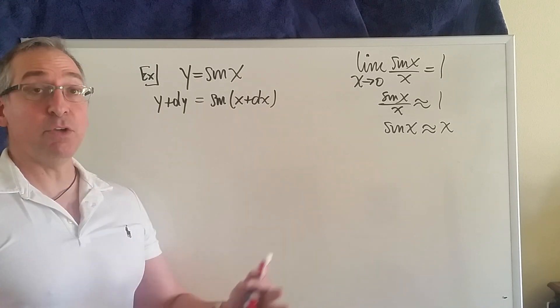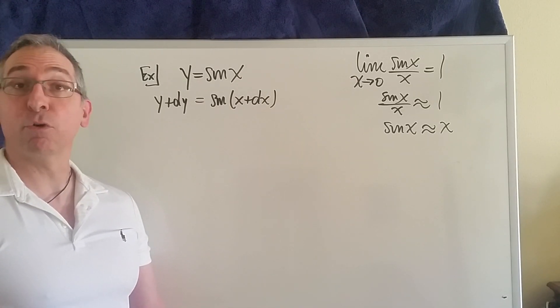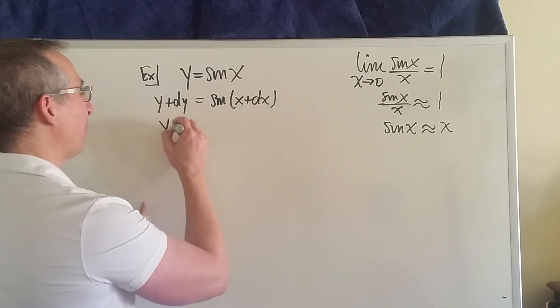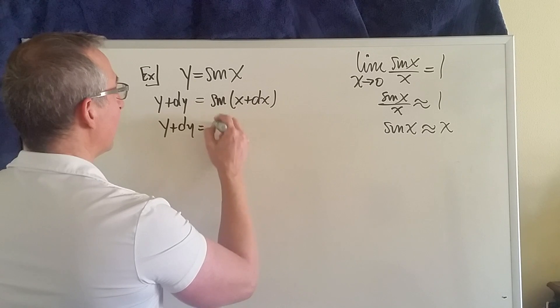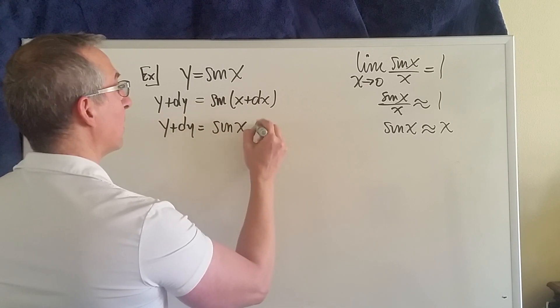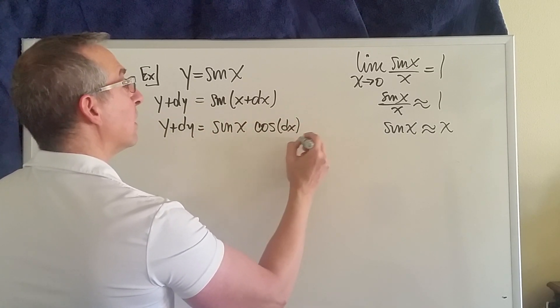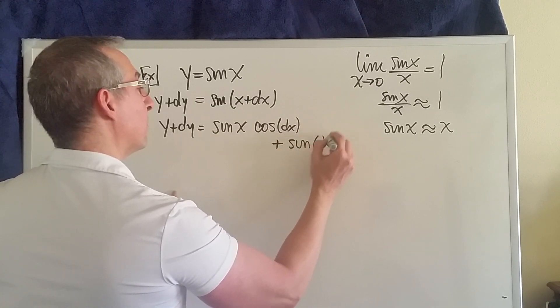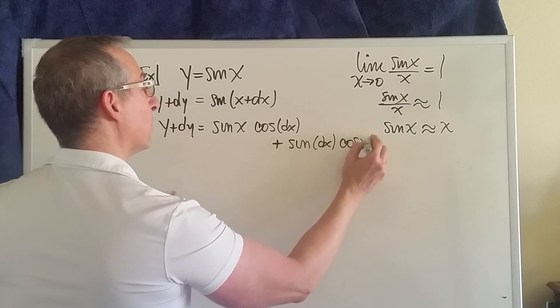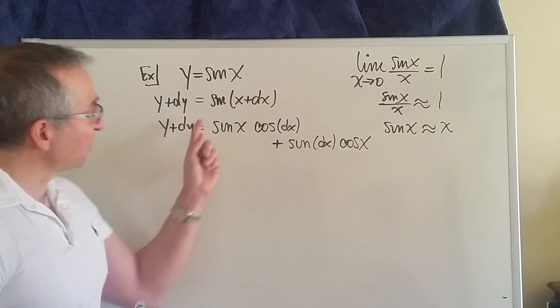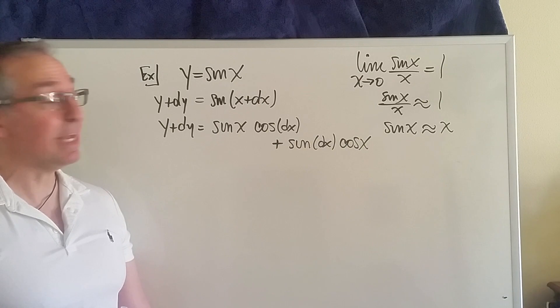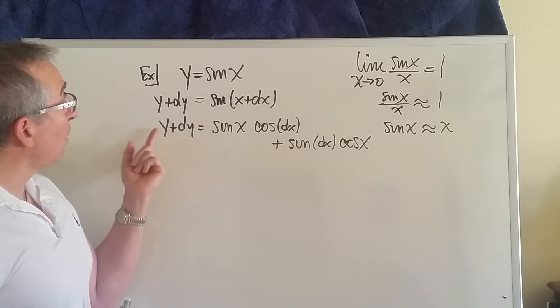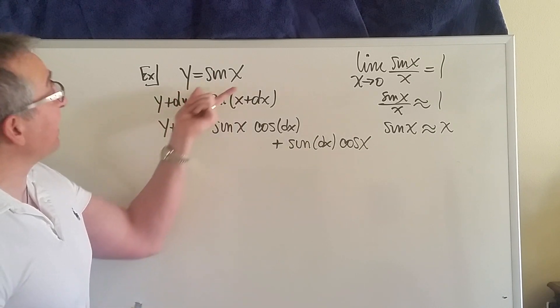And so we'll have this result right here: sin(x+dx) equals sin(x)cos(dx) plus sin(dx)cos(x). So what are we going to do with this? Well, first of all, the y right here, that y is the sine of x. This y right here is sin(x).